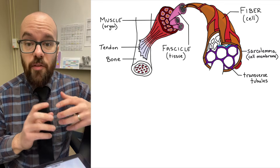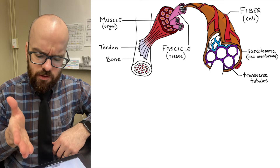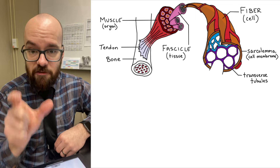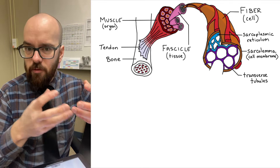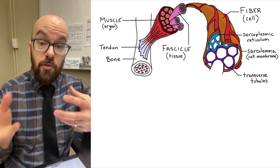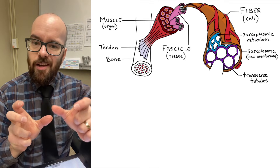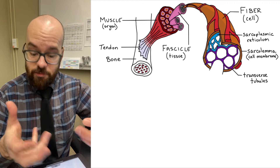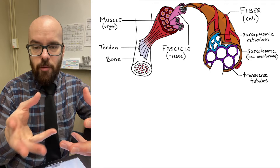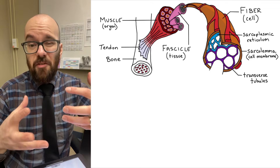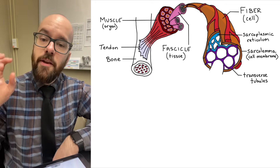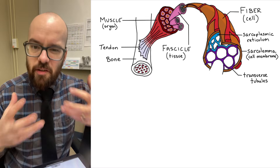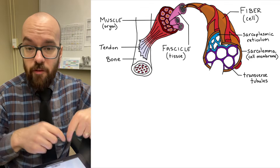The next organelle I want to talk about is called the sarcoplasmic reticulum. You'll notice I've used the term "sarco" a couple times now — sarcolemma, sarcoplasmic reticulum. Sarco just means flesh in Greek and we use that to refer to muscles. You'll also see the term "myo," which also means muscles. So anytime you see sarco or myo, we're talking about muscles. The sarcoplasmic reticulum has a lot in common with the endoplasmic reticulum — it's sort of the ER of the muscle, and it's going to store calcium, which is an integral part of the contraction system. We call that the sliding filament model, and we're going to see the filaments here in a little bit.